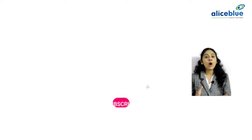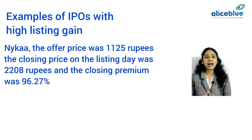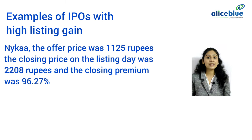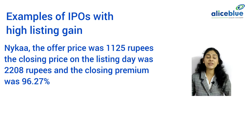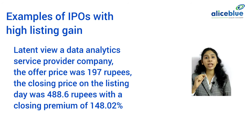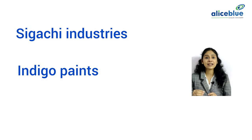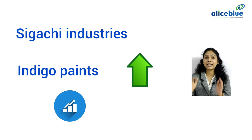Now let us dive into some examples of IPOs with highest listing gains recently. Nykaa — the offer price was Rs. 1,125 and the closing price on the day of listing was Rs. 2,280 with a closing premium of 96.27%. Latent View — the offer price was Rs. 197 and the closing price was Rs. 488.6 with a closing premium of 148.02%. There are other IPOs like Sigachi Industries, Indigo Paints, etc., which had higher profits on the listing day itself.